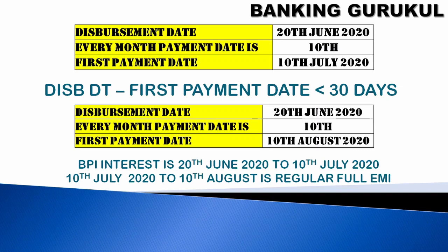Say you are taking a loan. The loan is processed and the amount is credited to your account — that's your disbursement date, which is 20th June. A bank always asks you on which date every month you want to pay your EMI. You say the 10th, so the first payment would be 10th July 2020.